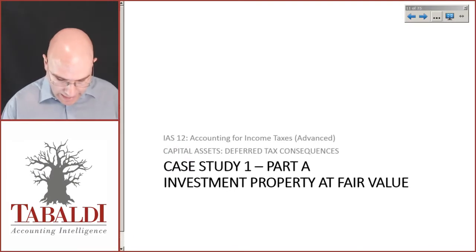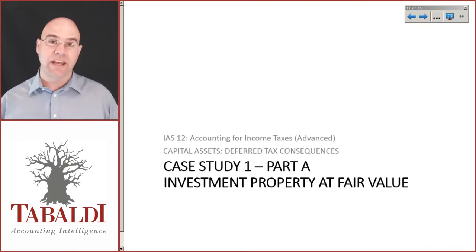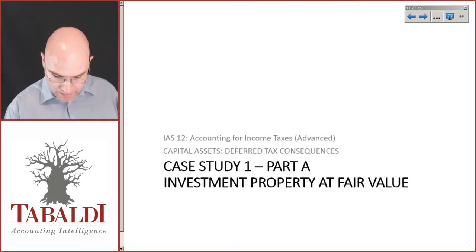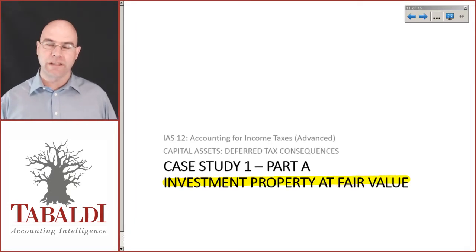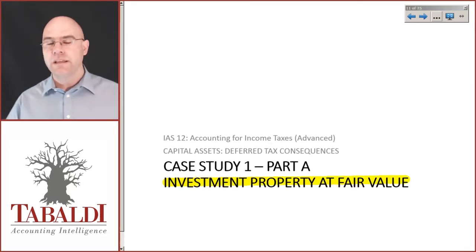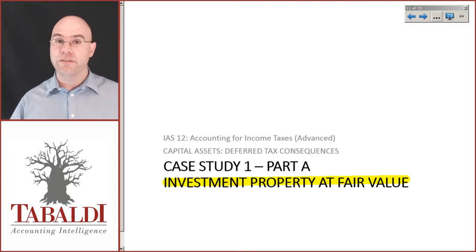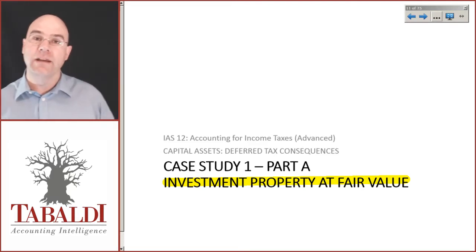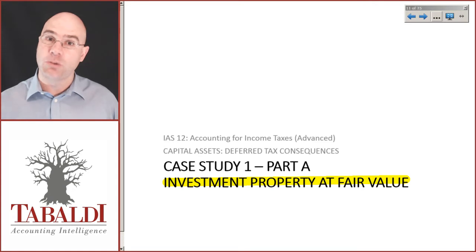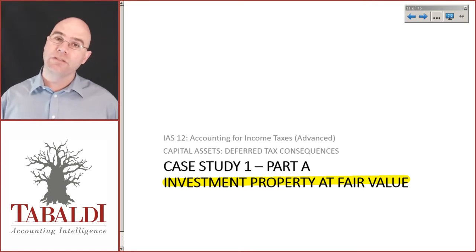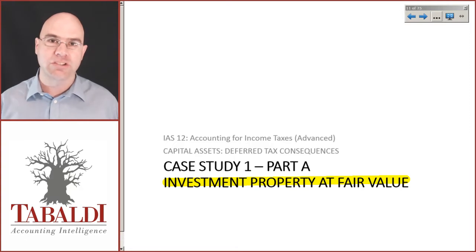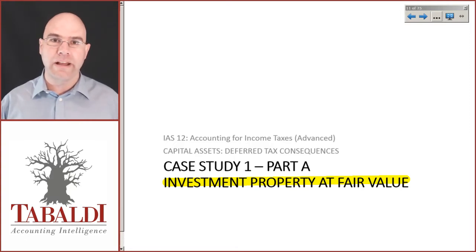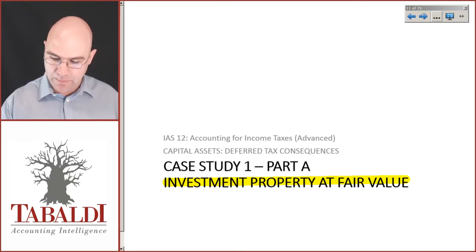Let's now do a case study, split into three parts. We'll deal with the first year and investment property specifically. IAS 40 says we have an accounting policy choice for subsequent measurements: either fair value investment property to profit or loss, or carry it on the cost and accumulated depreciation model. Here we're going to assume investment property at fair value, doing year one with a fair value adjustment above cost.